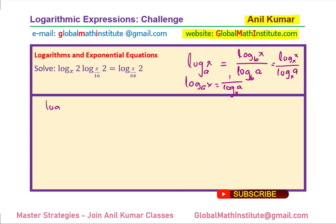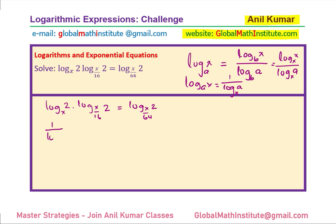Let us rewrite the equation: log base x of 2, times log base (x/16) of 2, equals log base (x/64) of 2. Applying the reciprocal identity, this becomes: 1 over log base 2 of x, times 1 over log base 2 of (x/16), equals 1 over log base 2 of (x/64).